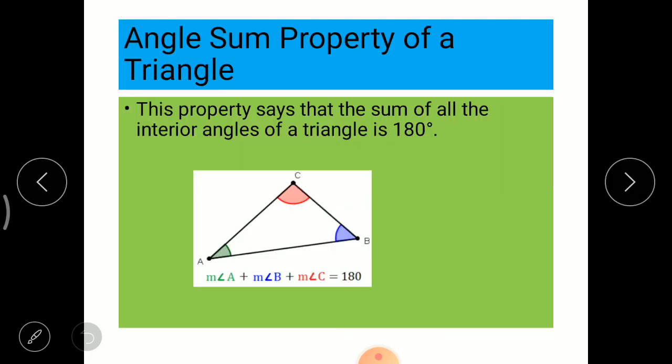Angle sum property of a triangle. This property says that the sum of all interior angles of the triangle is 180 degrees. So that measurement of angle A plus measurement of angle B plus measurement of angle C is equal to 180 degrees.